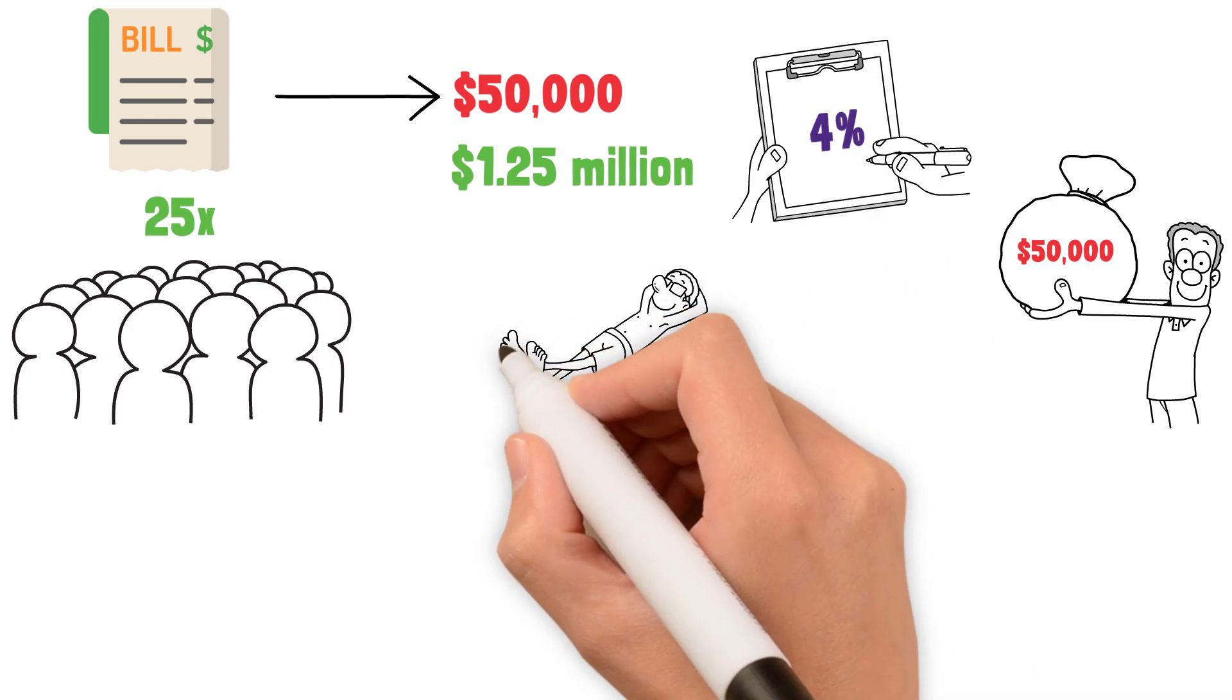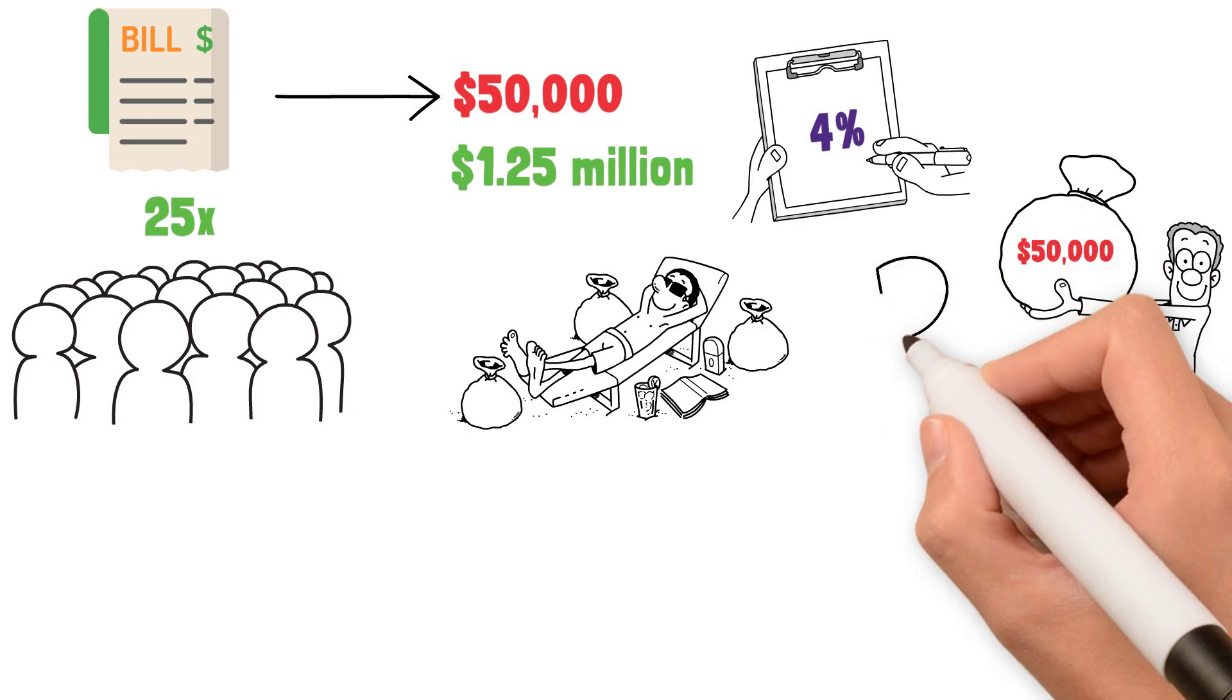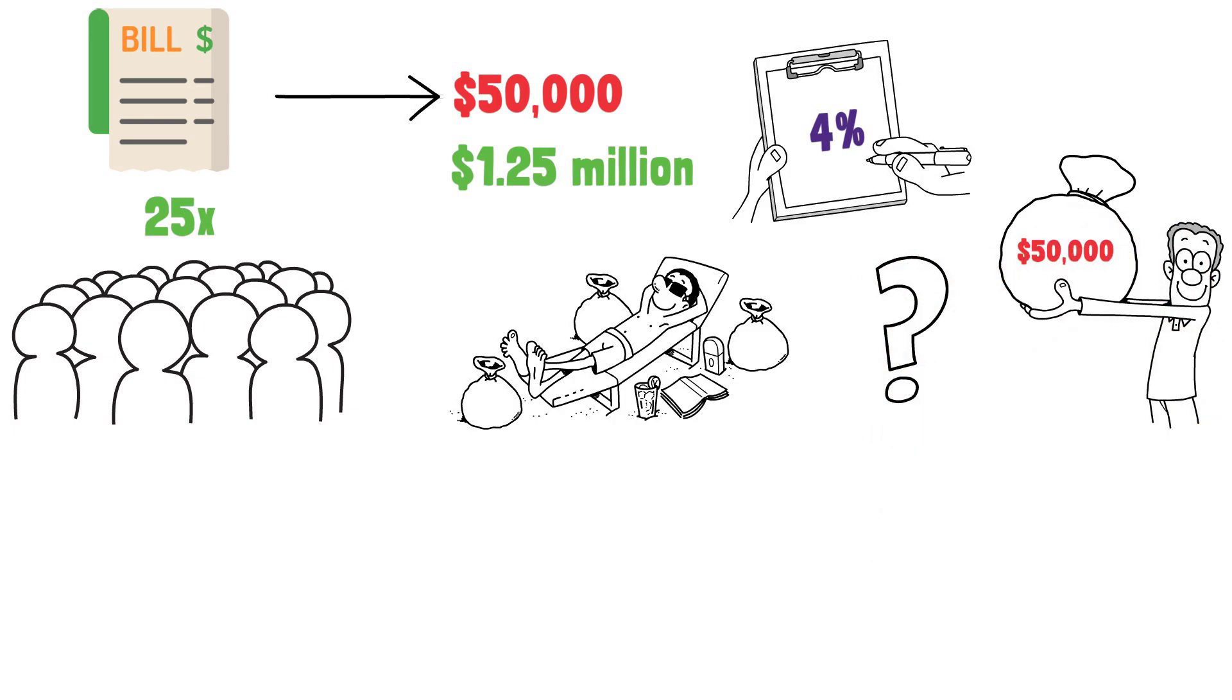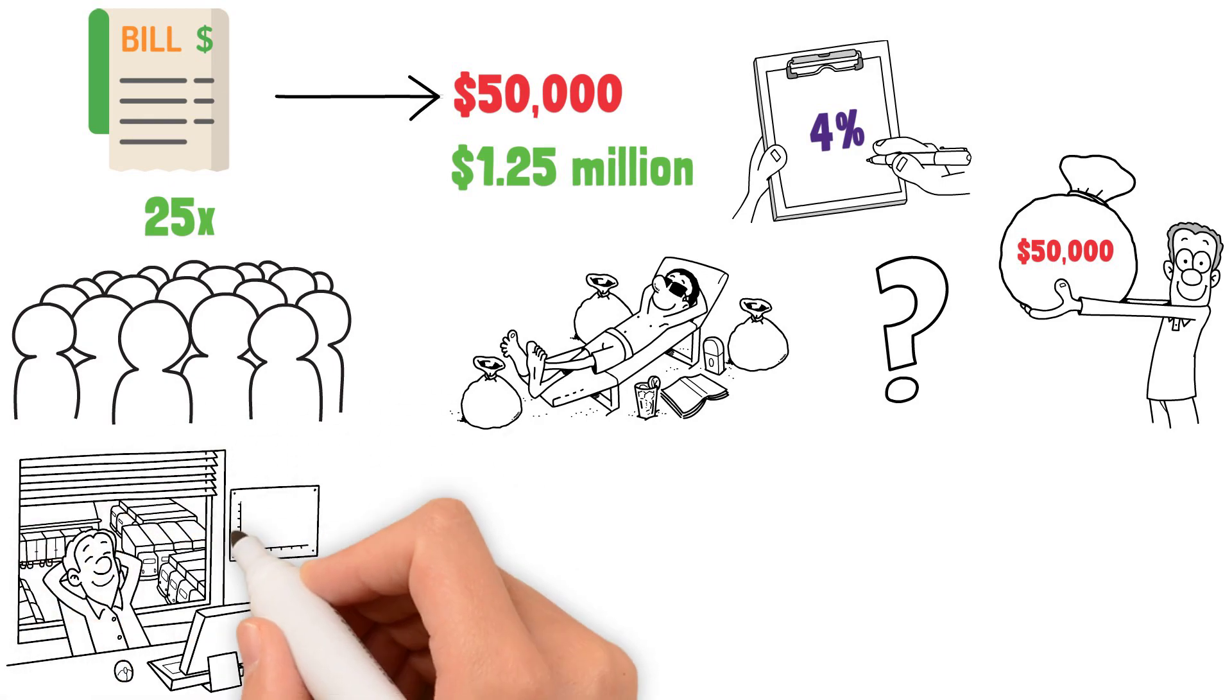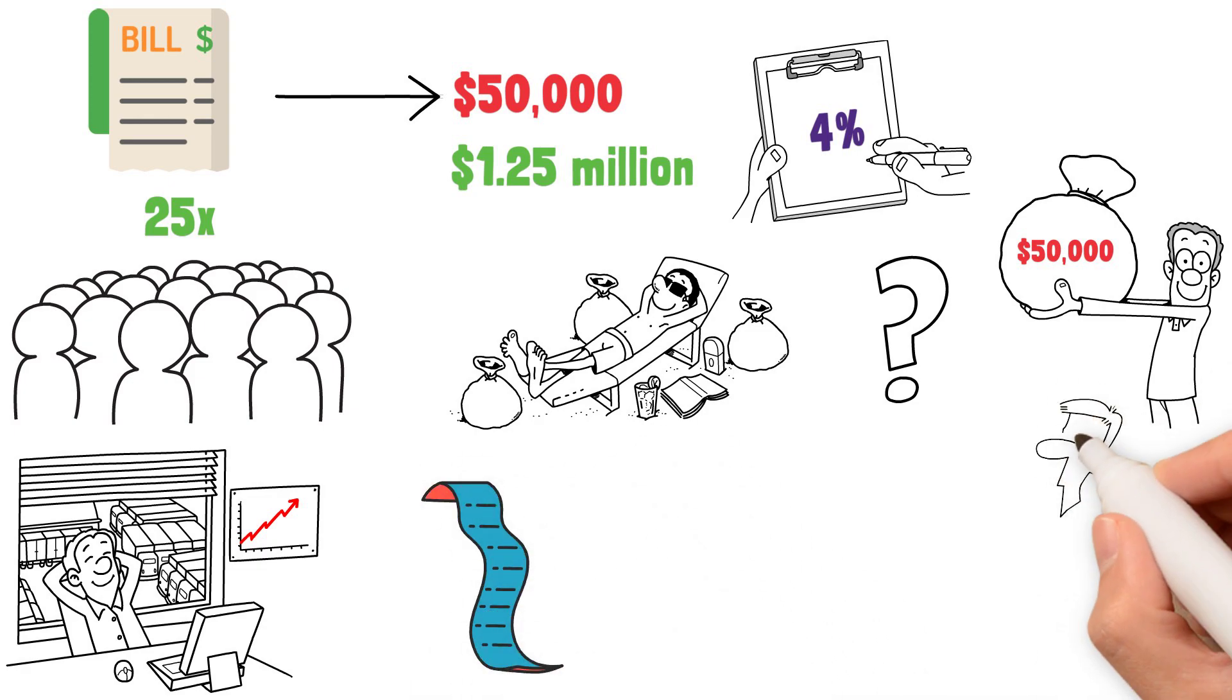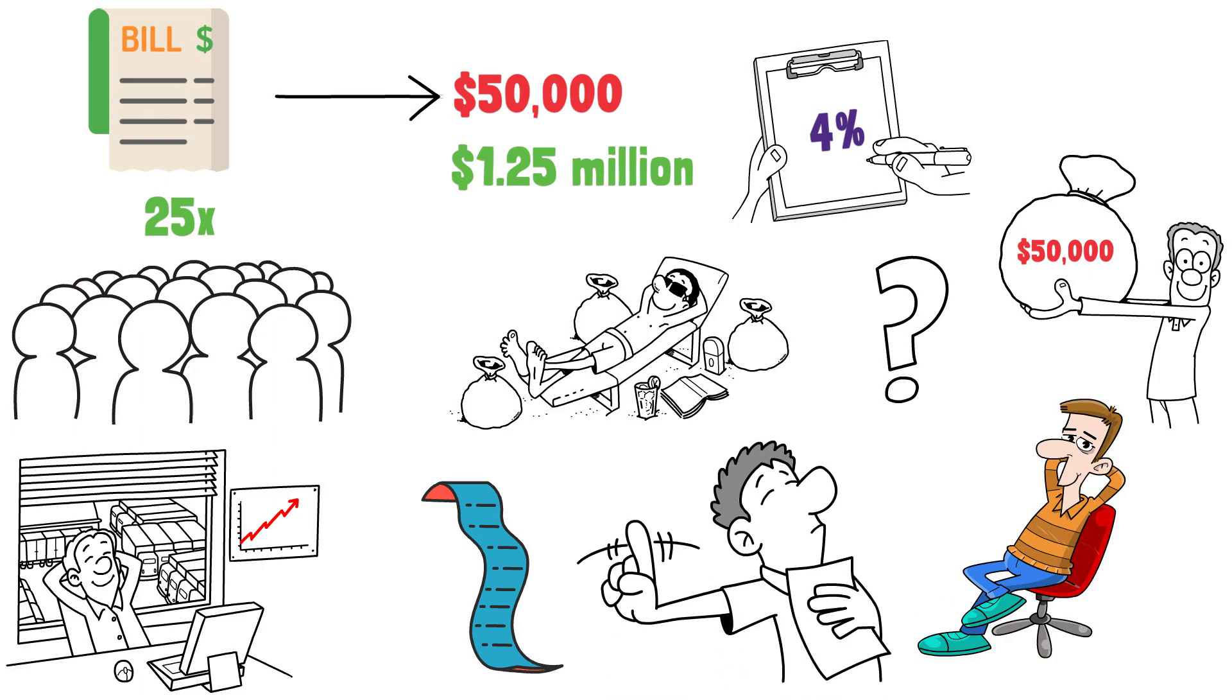Now, before we dive into how to get started down the path to retiring early through financial independence, we must first define what it means. Traditionally speaking, financial independence means reaching a point where your revenue-generating assets produce enough income to pay all of your bills. It's the point where you can handle your money problems without you having to work. But for many others, it's not only that.